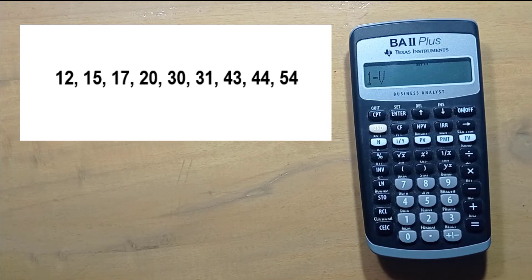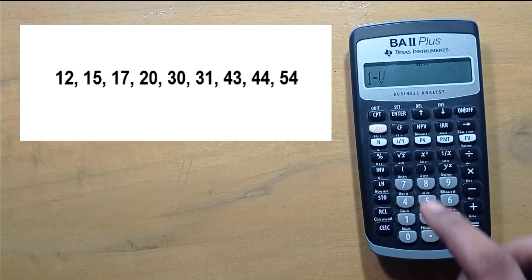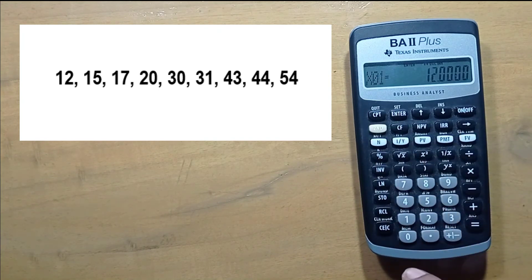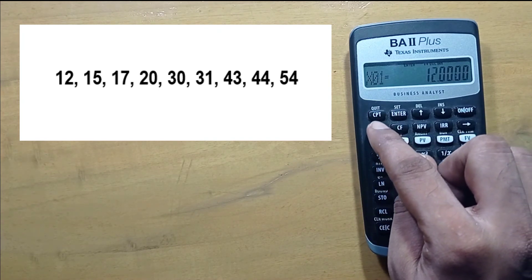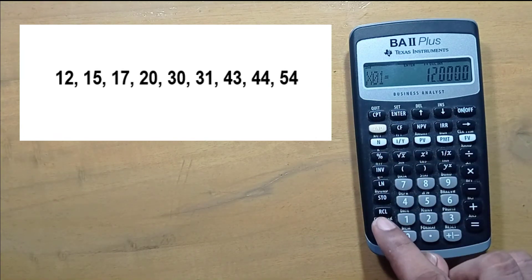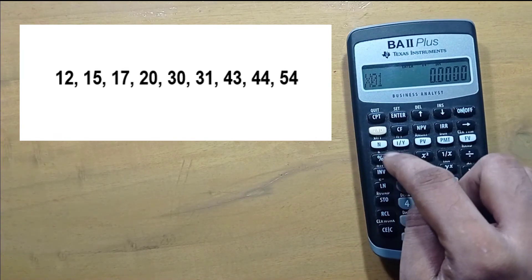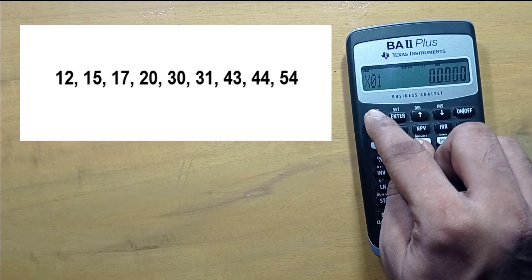This is how we can get mean, standard deviation, variance, and other parameters using this TI BA Plus financial calculator. To clear your work data, press 2nd and 7, now 2nd and clear work, then press 2nd and quit.